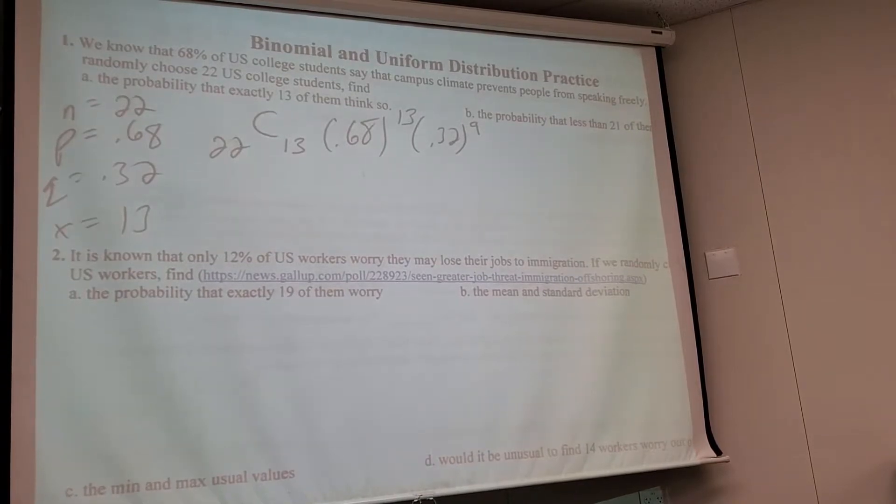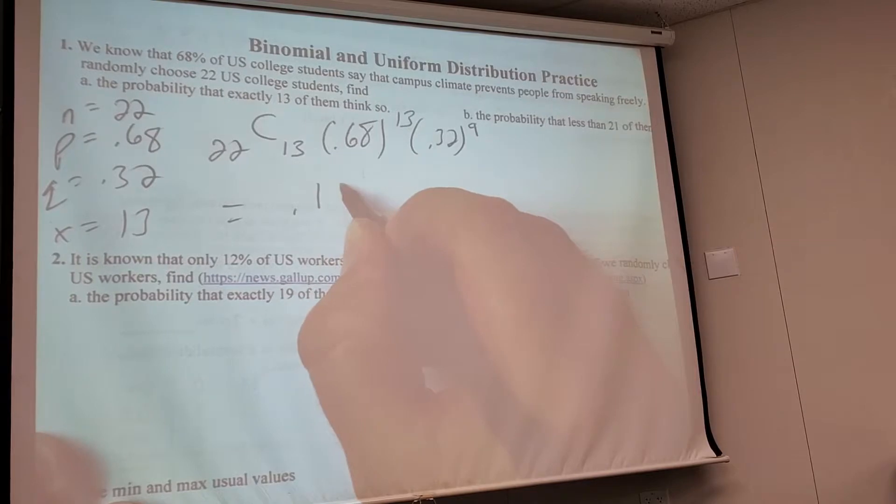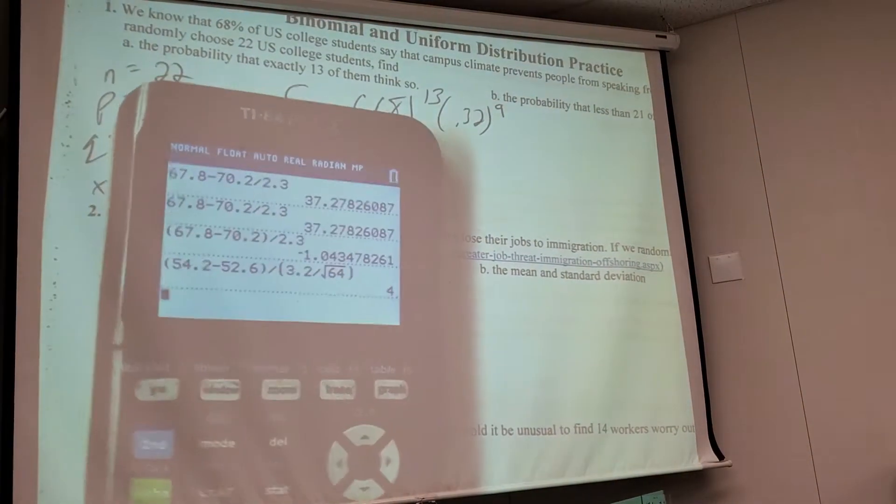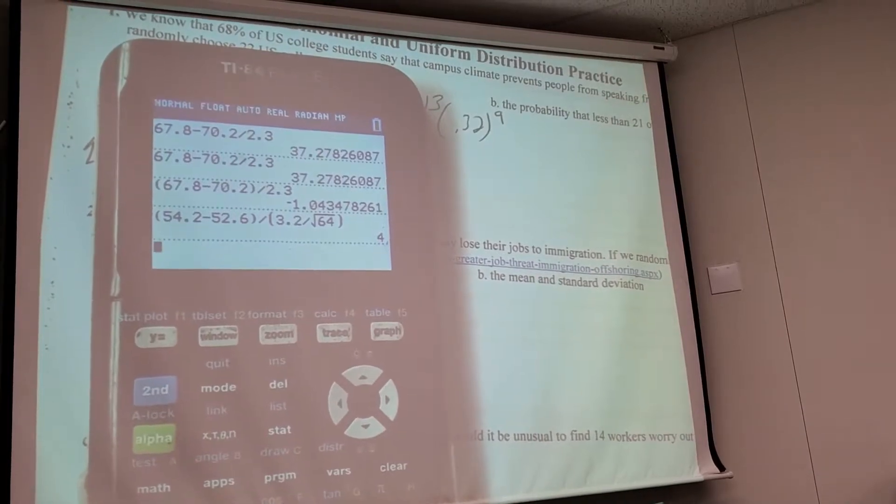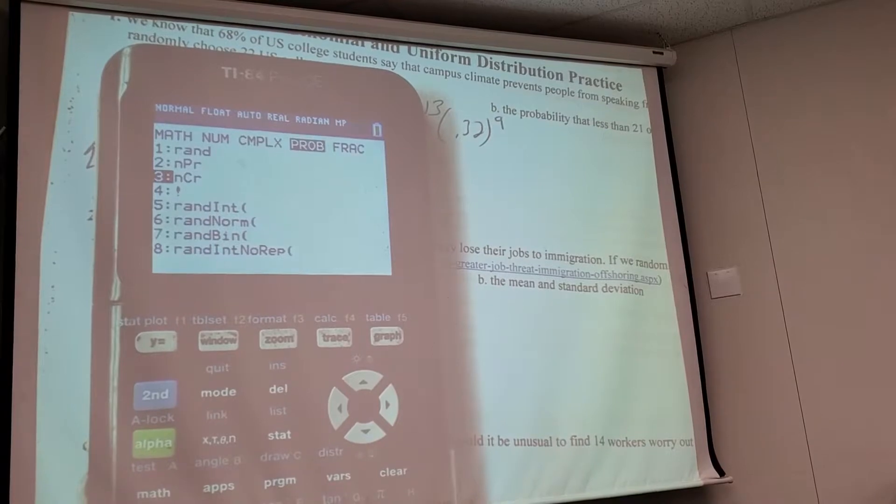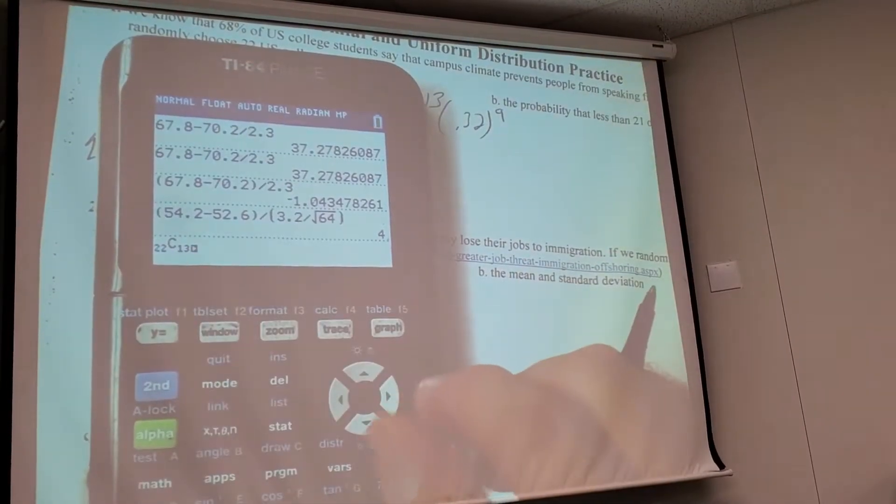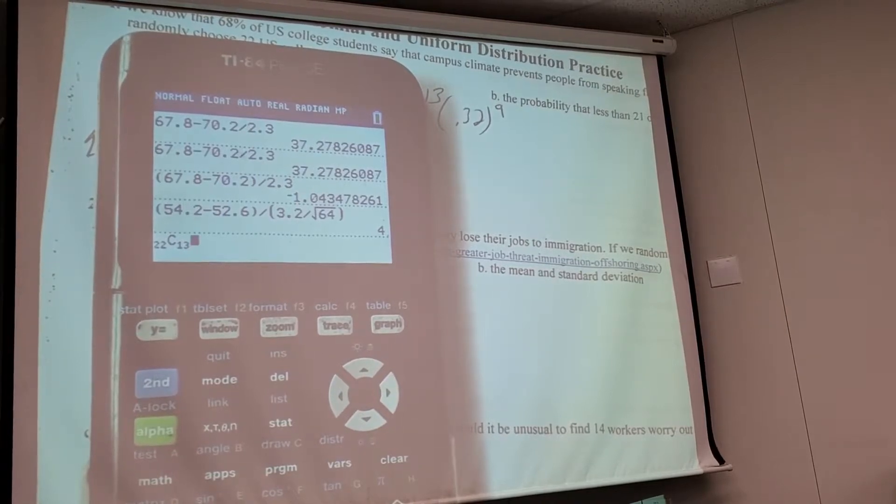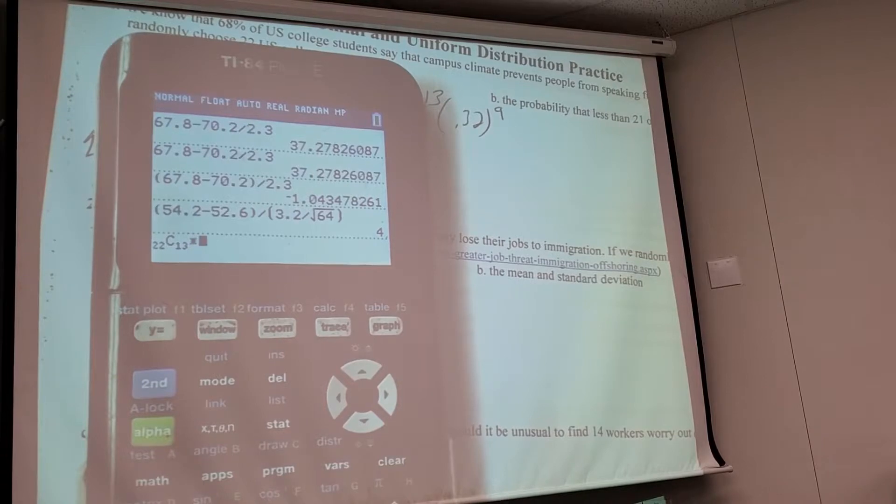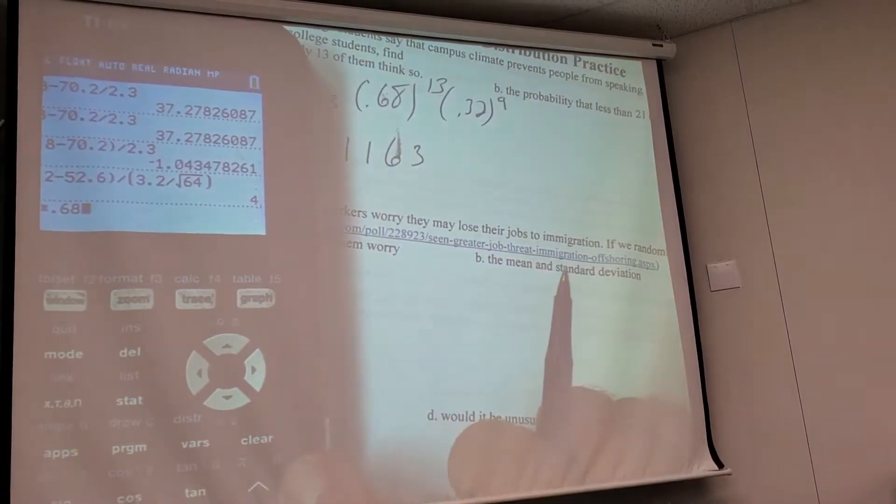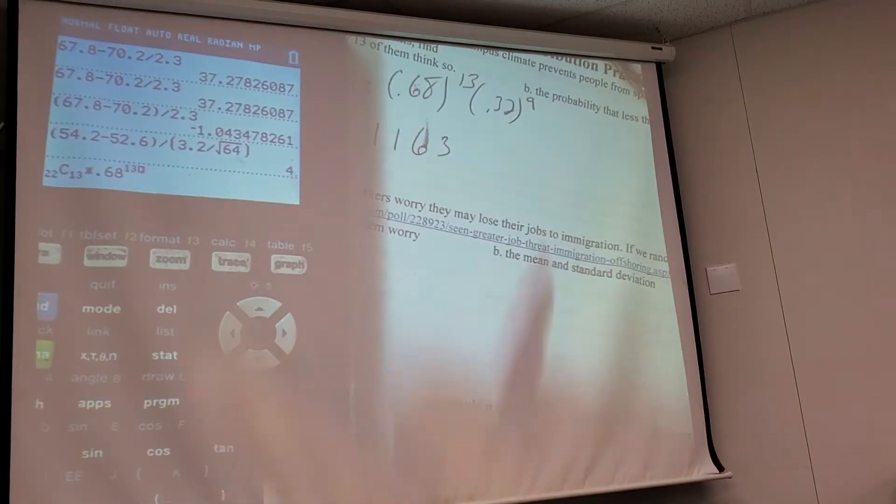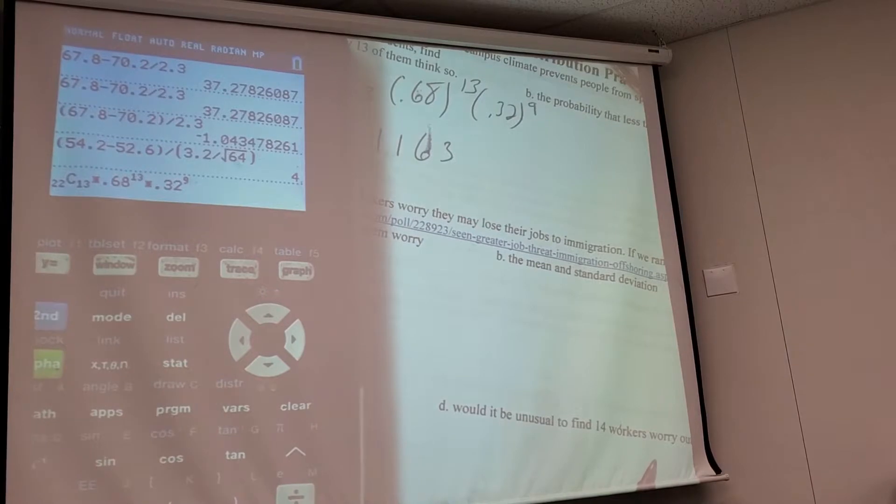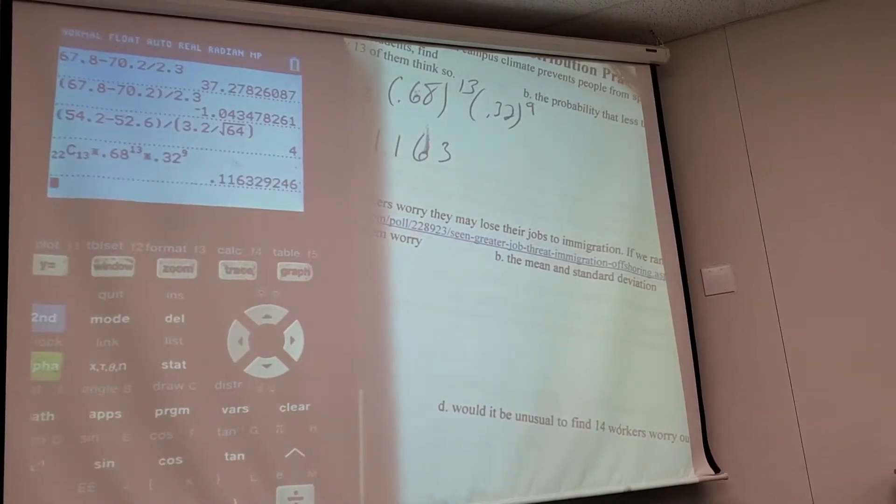And then when you plug that in, what do you guys get? 1163? Yes. Can you show us how to plug it in? Oh yeah, sure. All right. So depending on if you have the newer calculators, they'll look like this: 22 choose 13, so they actually have little subscripts. It sort of sucks because you have to remember to hit over to come back up.